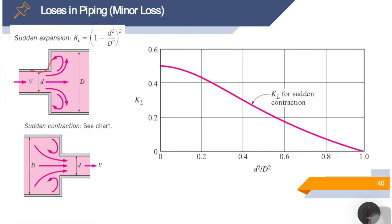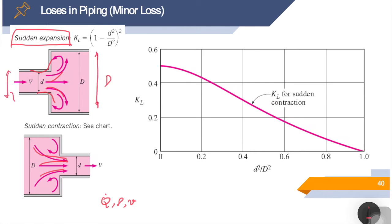Piping systems often involve sudden or gradual expansion or contraction to accommodate changes in flow rate or to control velocity and density. Losses are usually much greater in the case of sudden expansion or contraction due to flow separation. By combining equations of mass, momentum, and energy balance, the loss coefficient for sudden expansion is KL equals (1 minus (small d / large D) squared) squared. An alternative formula given in the book is KL equals alpha times (1 minus A-small over A-large) squared, where alpha is the kinetic energy correction factor.